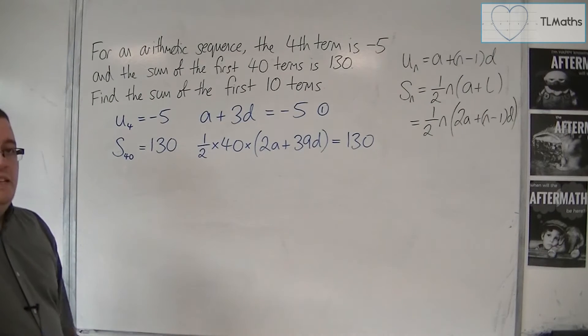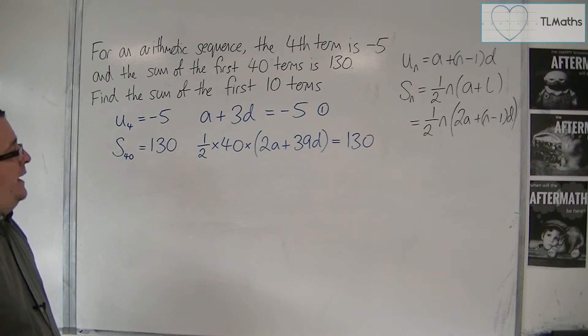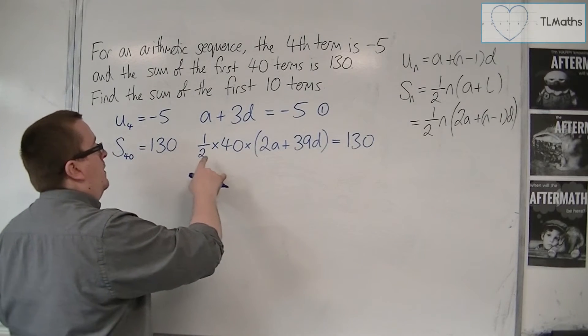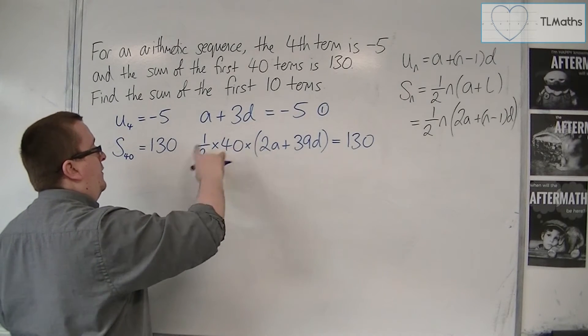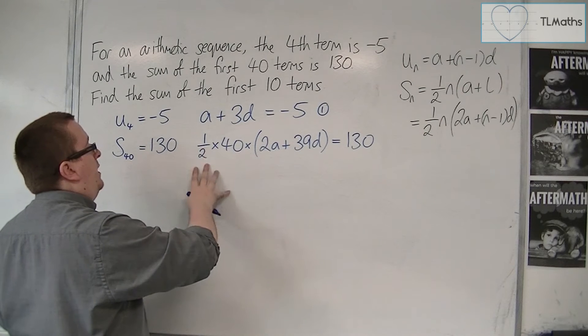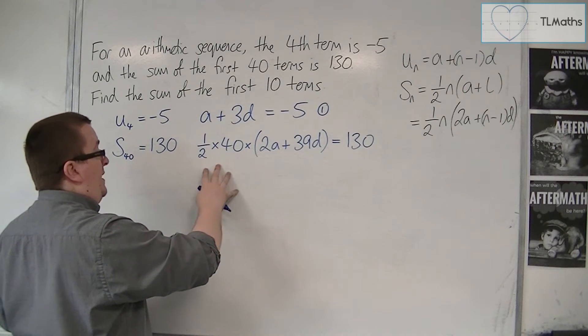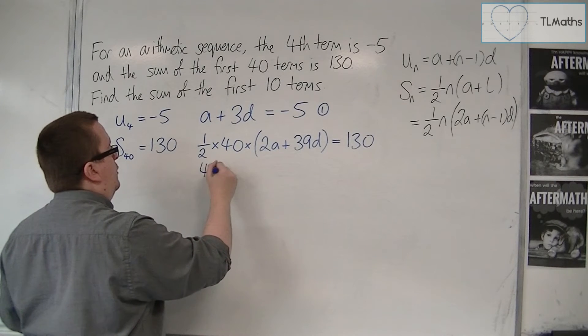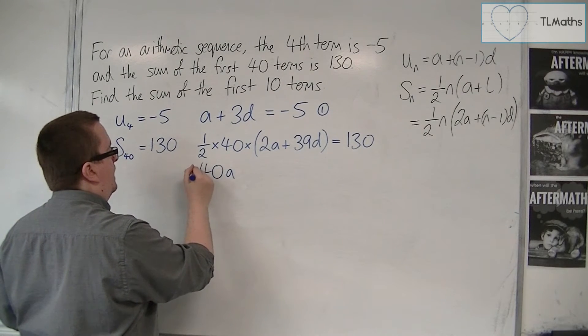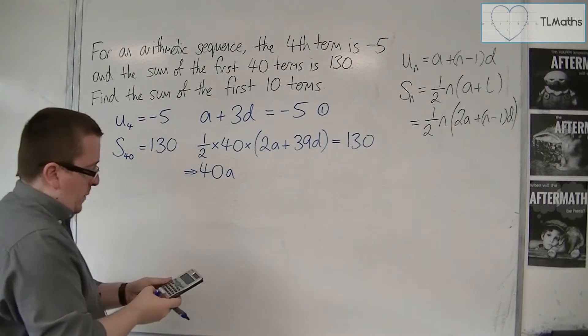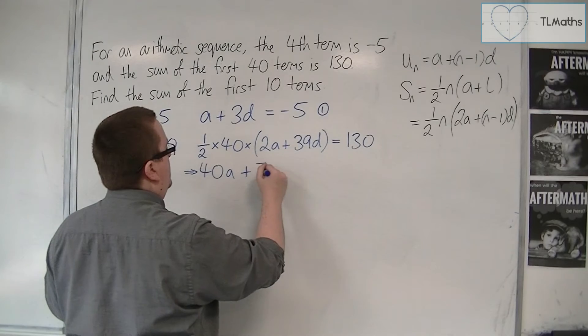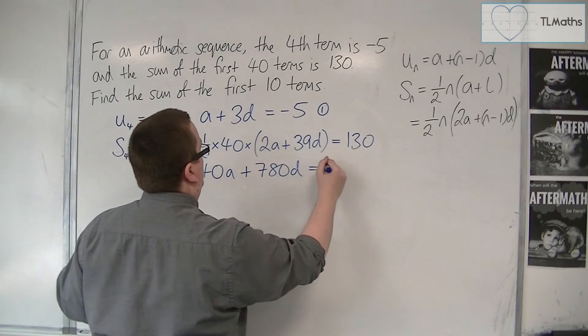Now, it's not in its neatest form as it stands, so if I multiply through by this, so expand the bracket out, so 1 half times 40 is 20, so multiply through by 20, I'm going to get 40a, and then 20 times 39 is 780, so 780d is equal to 130.